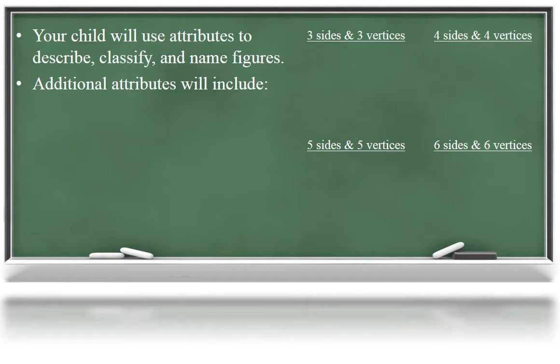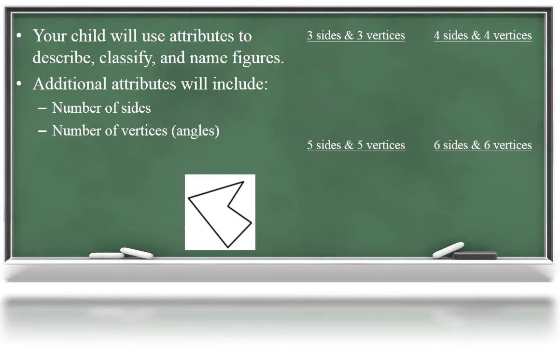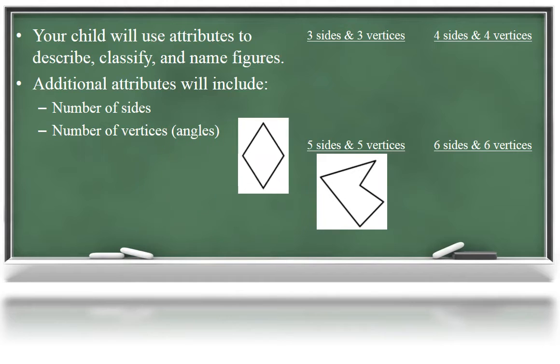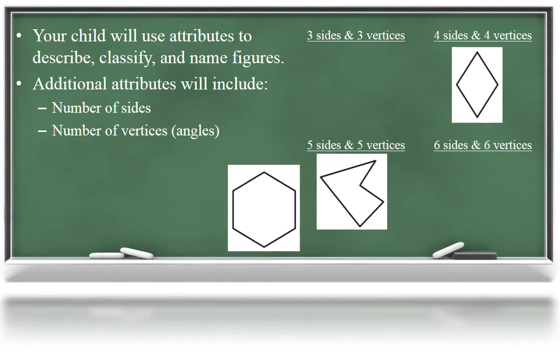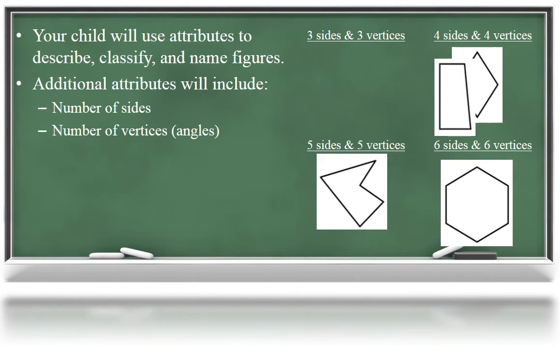After working with polygons, your child will focus on classifying shapes by the number of sides and angles. They may sort shapes focusing on these attributes. Five sides and five vertices, four sides and four vertices, six sides and six vertices, and so on.